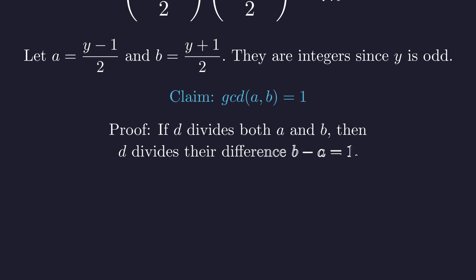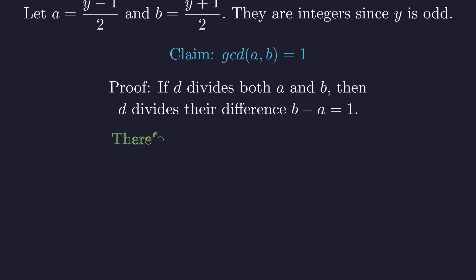We need to prove that these two integers are coprime. If a number d divides both a and b, then it must also divide their difference. The difference between b and a is exactly 1. The only positive integer that divides 1 is 1 itself. Therefore, the greatest common divisor of a and b must be 1. Consequently, these two factors a and b are coprime.